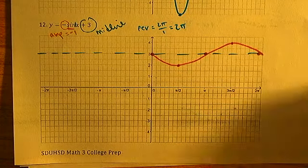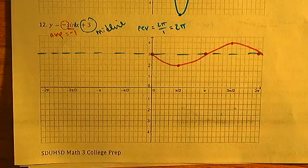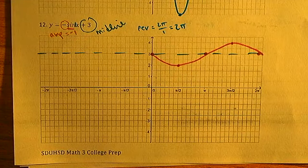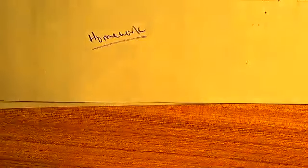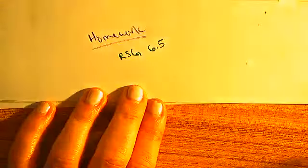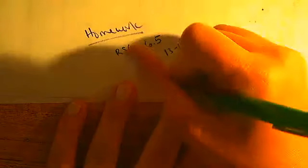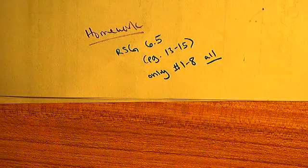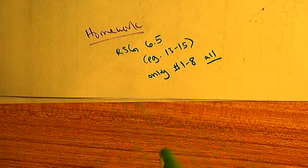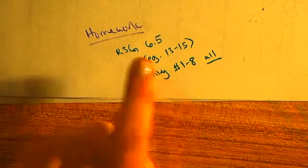So you have learned how to graph sine and cosine — that's awesome! For your homework, it is RSG 6.5, which is on pages 13 through 15. You are only going to do numbers one through eight. The assignment does continue to about number 12, but you only need to do one through eight.